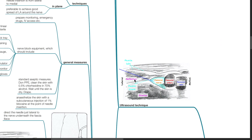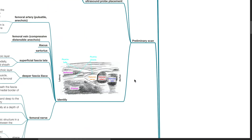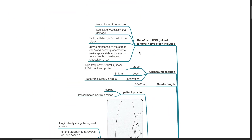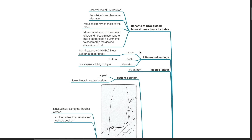Ultrasound technique. Benefits of ultrasound-guided femoral nerve block include less volume of LA required, less risk of vascular or nerve damage, reduced latency of onset of block, and allows monitoring of the spread of LA and needle placement to make appropriate adjustments. Ultrasound settings: use a high-frequency linear broadband probe set at a depth of 3-4 cm with a transverse or slightly oblique orientation. Needle length of choice is 50-80 mm.